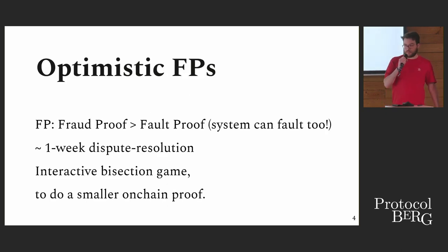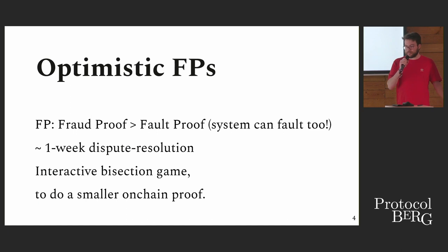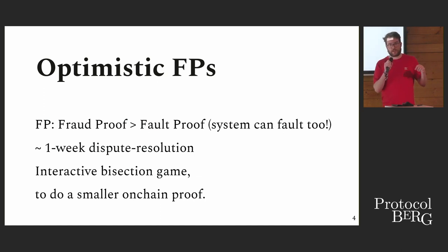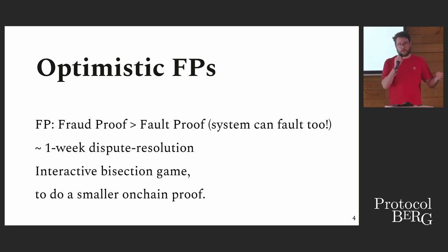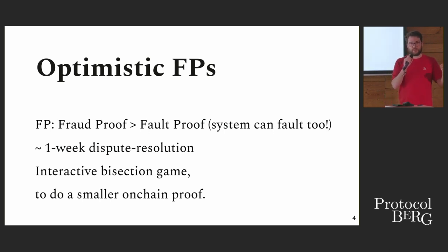About optimistic fault proofs: I use 'fault proof' rather than 'fraud proof' because the system can fault too. It's not just actors trying to insert malicious data — the whole system needs to be secure. The main property that differentiates these proofs from ZK proofs is that there's a one-week dispute period. This one-week dispute period creates a delay for withdrawals, not for deposits. People can onboard very quickly. It's the withdrawal system — the bridge from layer two back to layer one — that introduces this fault proof game.